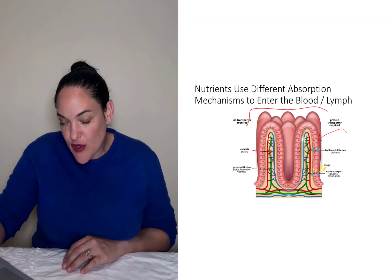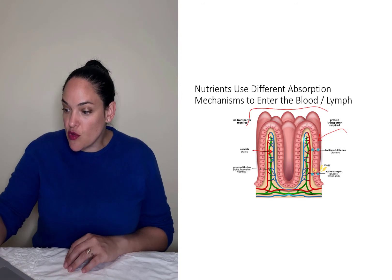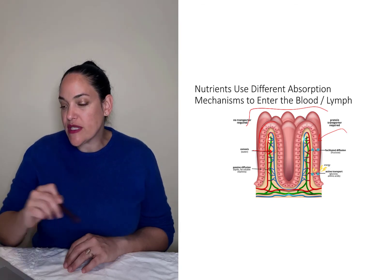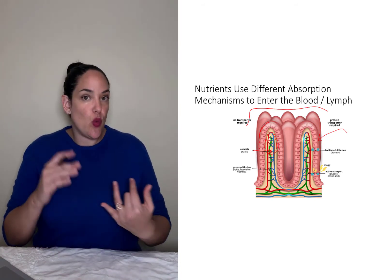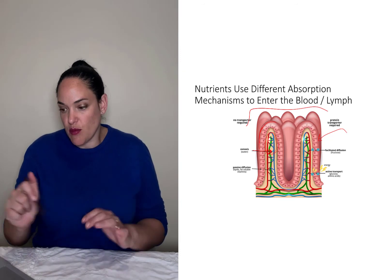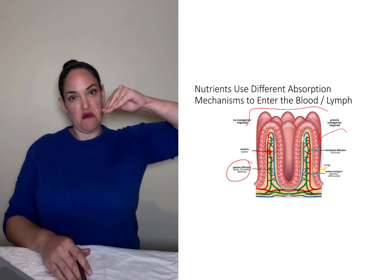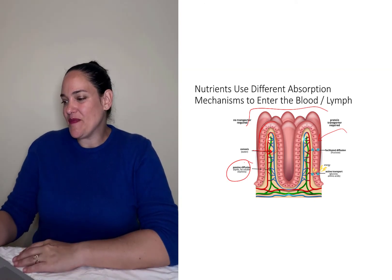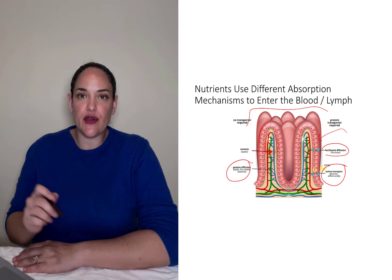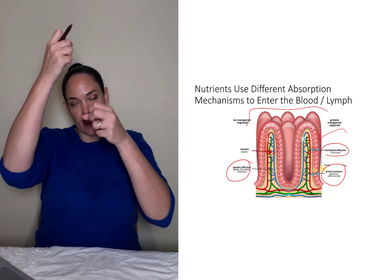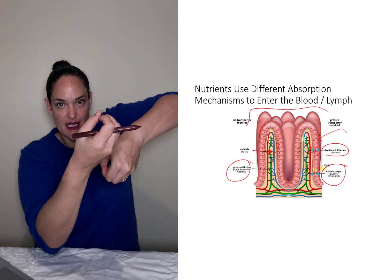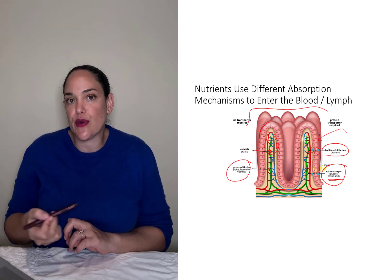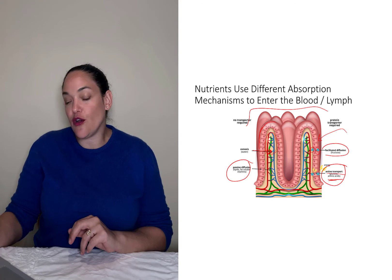Different nutrients use different absorptive processes to move across the mucosal wall and into the vessels that carry them around the body. Water uses osmosis. Lipids and fat-soluble vitamins use passive diffusion, passing through the phospholipid membranes of intestinal cells. Sugars and amino acids use protein transporters — proteins embedded in the cell membrane that provide a tunnel for absorption. Glucose and amino acids also require energy for absorption, so they are taken up by active transport.